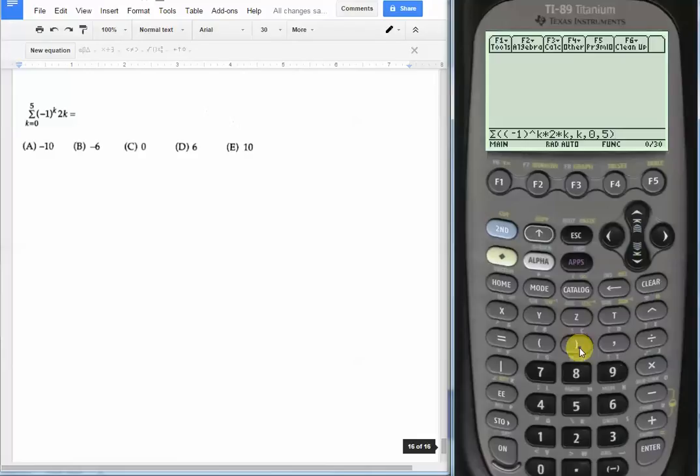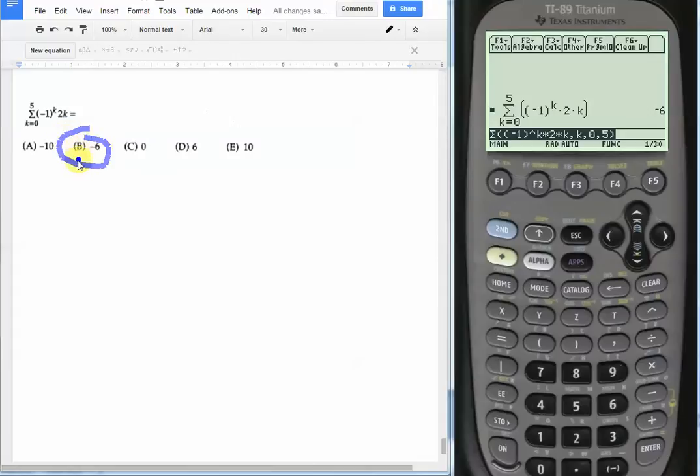Close the whole parentheses. Hit Enter. And we're done. The whole thing equals negative 6. So choice B is our answer.